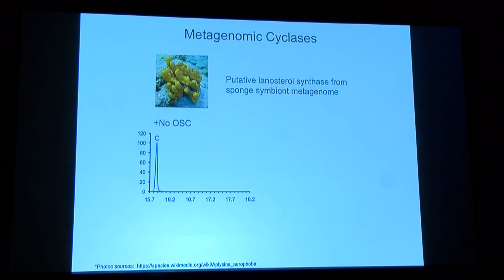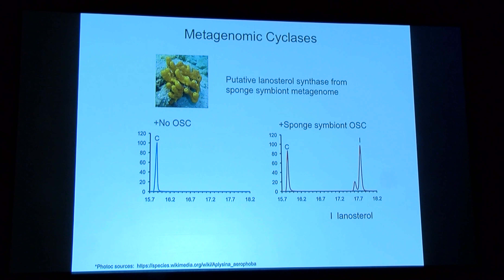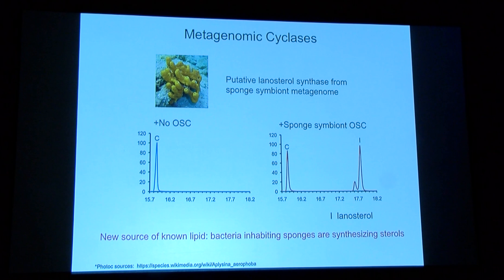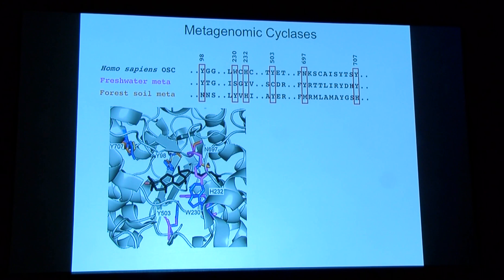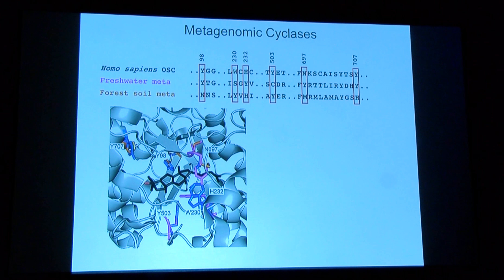When I express Methylmicrobium's OSC — one of the gamma-proteobacterial methanotrophs — it produces lanosterol. When I overexpress the OSC from Eudoria, it looks almost identical to what we see when we extract from Eudoria cells themselves — about the same ratio. From this, we can conclude that the OSC is directly synthesizing these lipids. We got excited because what we hoped to do is recognize novel oxidosqualene cyclases and find novel lipids to relate back to orphan biomarkers — we don't want to keep looking at more organisms that only synthesize lanosterol.